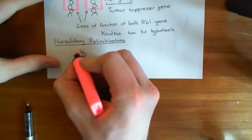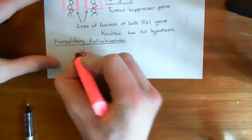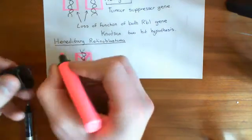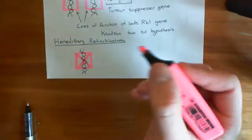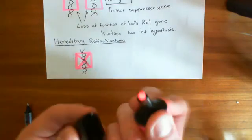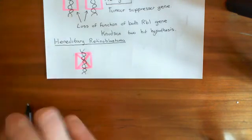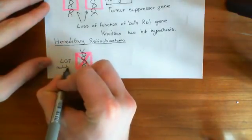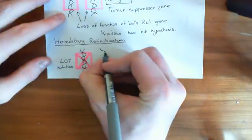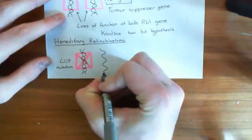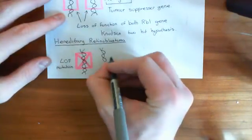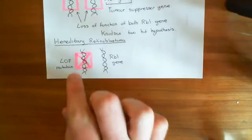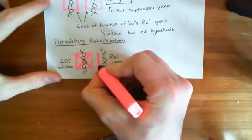This gene has some mutation meaning it does not make a functional retinoblastoma protein — potentially the whole gene could have been deleted, or it has a mutation so the protein is made but doesn't actually work, doesn't bind to the E2F-DP complex. You've got a loss of function (LOF) mutation in one of your genes for the retinoblastoma protein. The other gene is perfectly functional. So in all the cells of your body, you have one RB1 gene that is not working and one that is working.